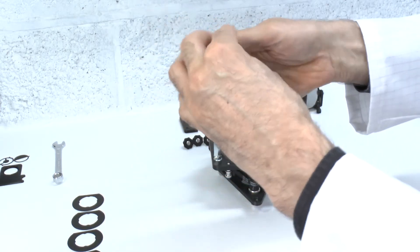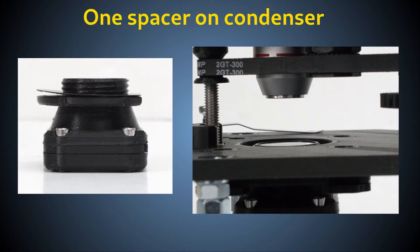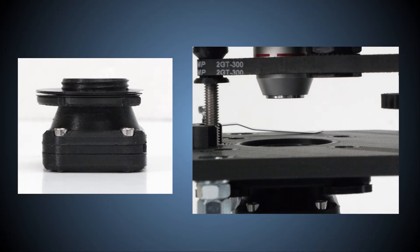Without any spacers, the condenser top lens will protrude a little above the top surface of the stage, and you won't be able to hold the condenser very tightly against the stage with the condenser gripper brackets. With one spacer in place, the top of the condenser will be about level with the top surface of the stage, and this is about right for most observations. If you want to lower the condenser further below the stage, you can do that by simply adding more spacers.